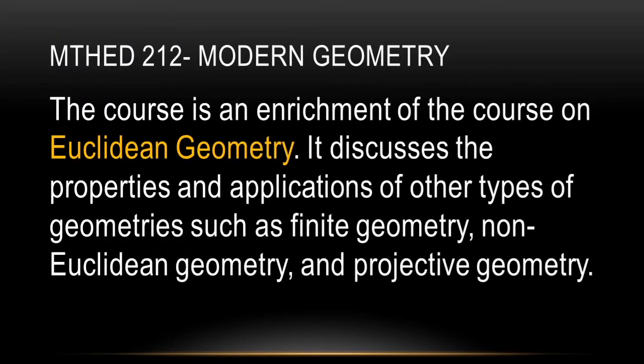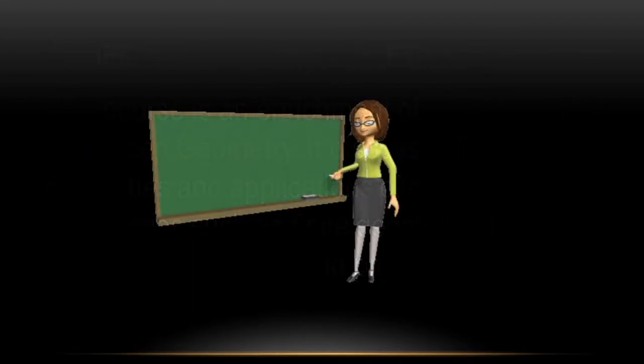Modern Geometry is a course which is an enrichment of the course on Euclidean geometry. It discusses the properties and applications of other types of geometries, such as finite geometry, non-Euclidean geometry, and projective geometry.